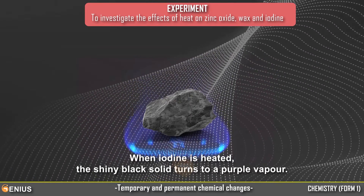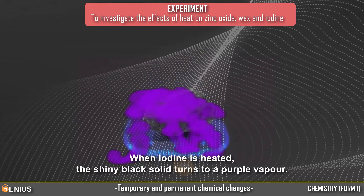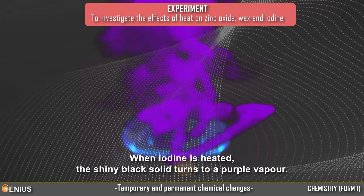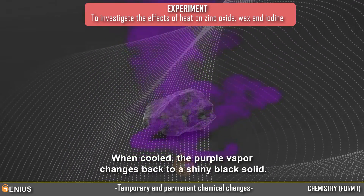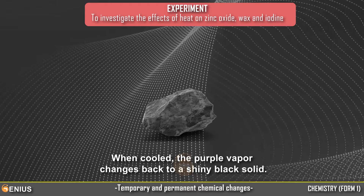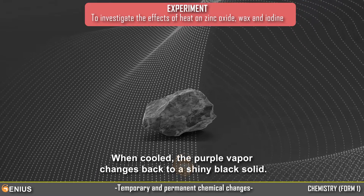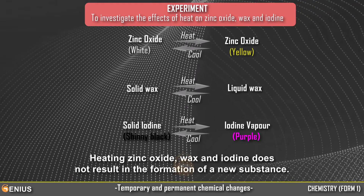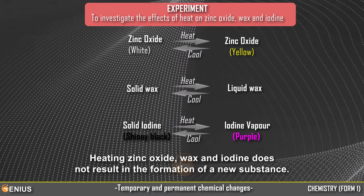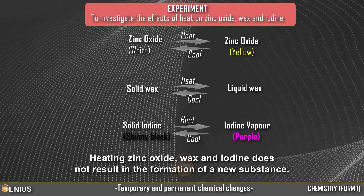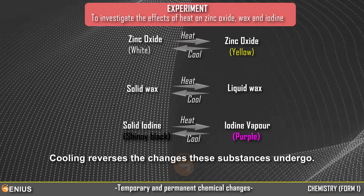When iodine is heated, the shiny black solid turns to a purple vapor. When cooled, the purple vapor changes back to a shiny black solid. Heating Zinc Oxide, wax, and iodine does not result in the formation of a new substance. Cooling reverses the changes these substances undergo.